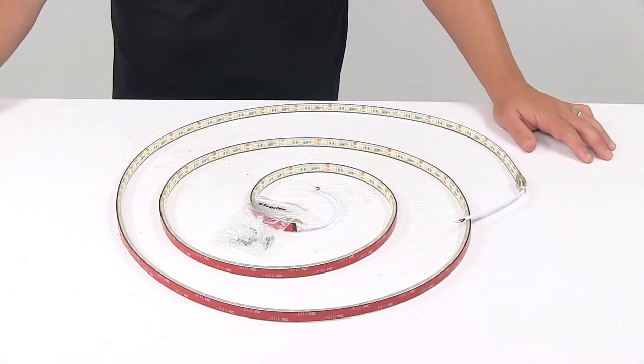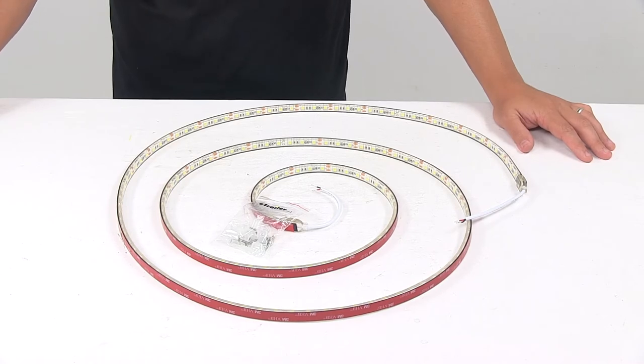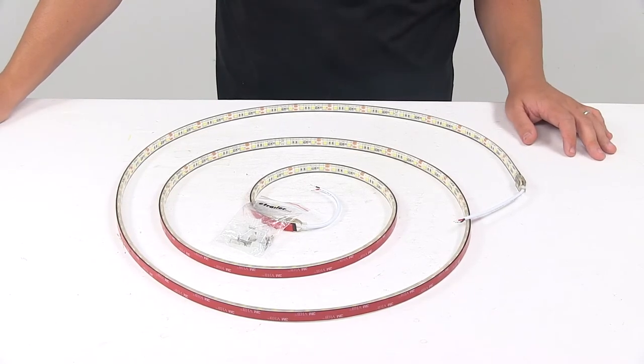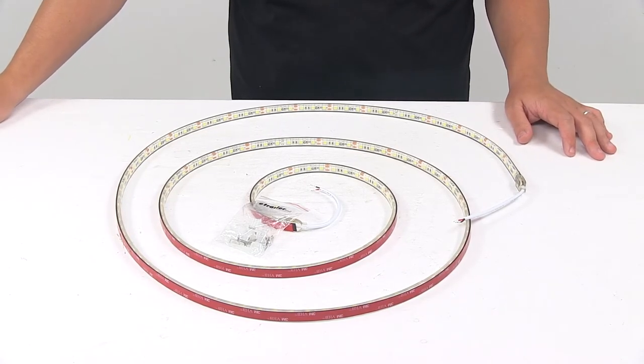Today we're taking a look at a 108 inch long LED light strip. This LED light strip is the perfect solution for lighting up enclosed spaces. It's ideal for enclosed trailers, truck compartments, truck boxes, truck beds, and so on.